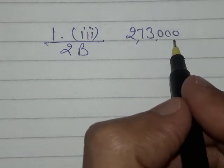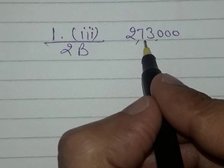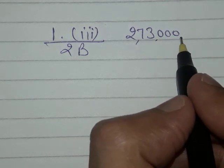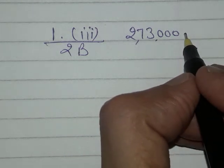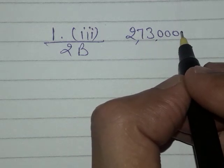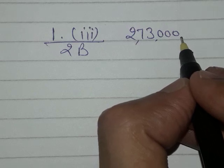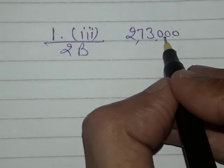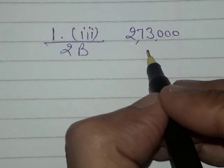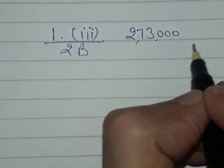To make this number 2.73, we have to shift the decimal point. First we will find how many digits we have to shift the point. We can see one, two, three, four, and five - we have to shift the point five digits to the left side.